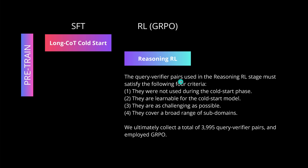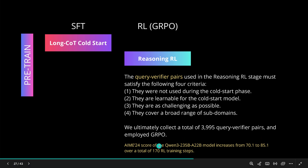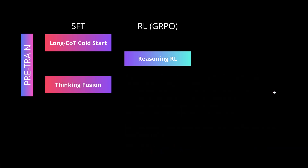For the reasoning reinforcement learning stage with GRPO, they used about 4,000 query-verifier pairs with four criteria: not used during cold start but learnable from the cold start model, as challenging and interesting as possible, covering a broad range of subdomains. They employed GRPO, and performance data shows the AIME24 benchmark score for the 235B MoE model increased from 70 to 85 over 170 reinforcement learning training steps.